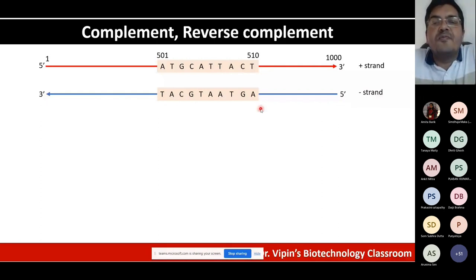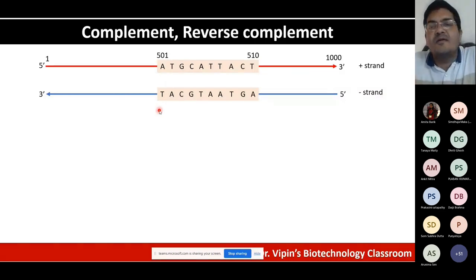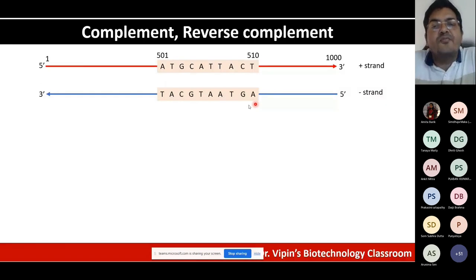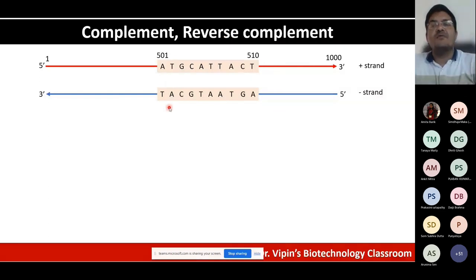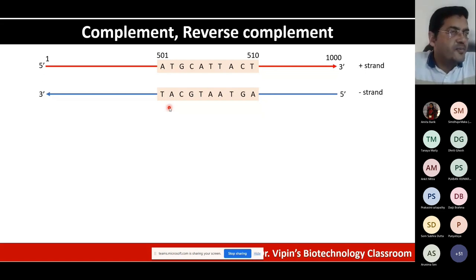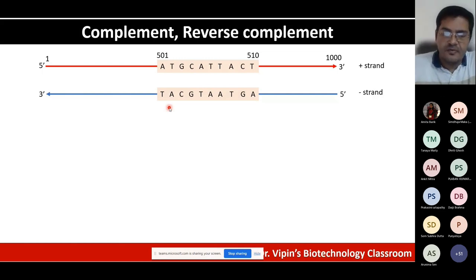All biological processes — replication, transcription, and translation — occur from 5' to 3'. When a gene is on the minus strand, you must first generate the complement of the top sequence and then read it in reverse — hence the term 'reverse complement.' For genes on the minus strand, a reverse complement is required when retrieving the sequence; for genes on the plus strand, the sequence can be retrieved directly.